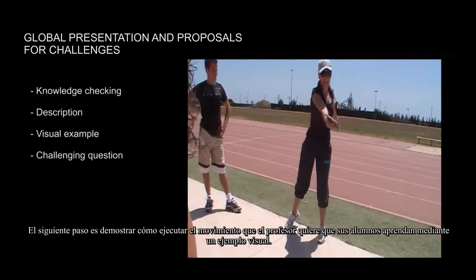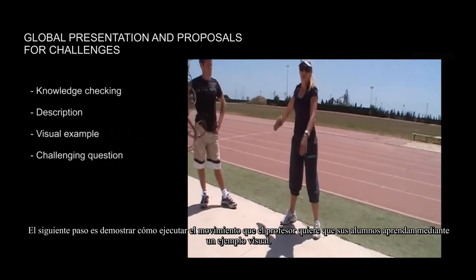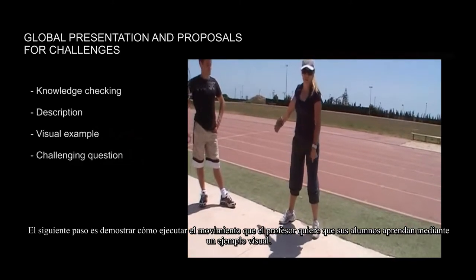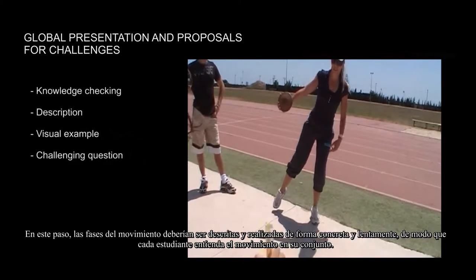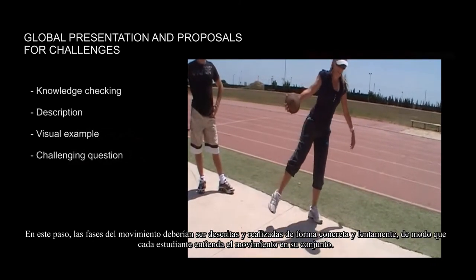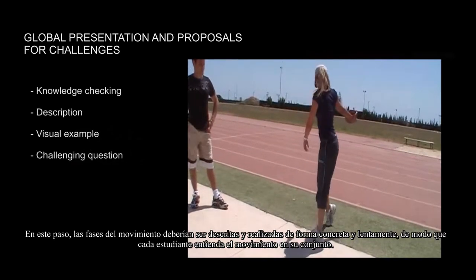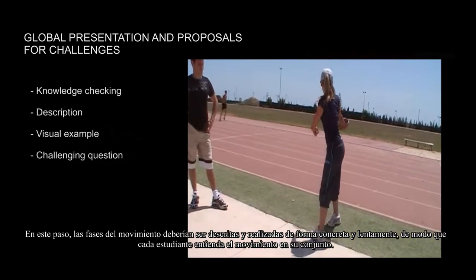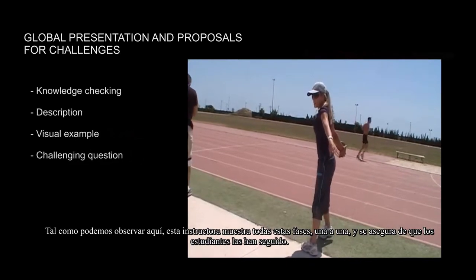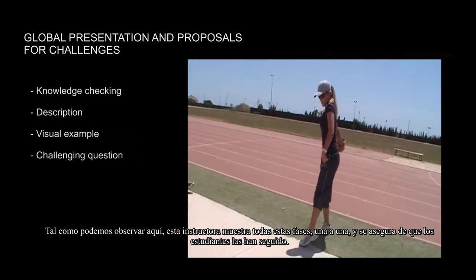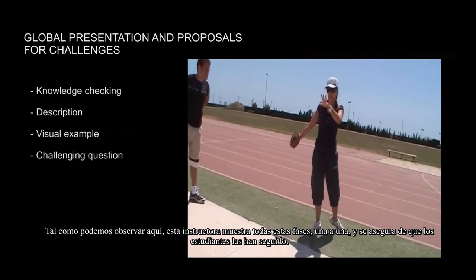The next step is to demonstrate how to perform the movement the teacher wants the students to learn through a visual example. The movement's phases should be concretely described and performed slowly so that every student understands the whole movement. As we can see here, the instructor shows all these phases one by one and ensures that the students caught up with it.